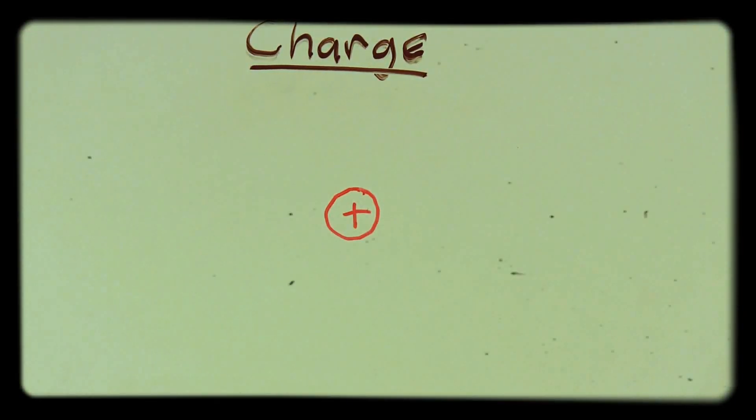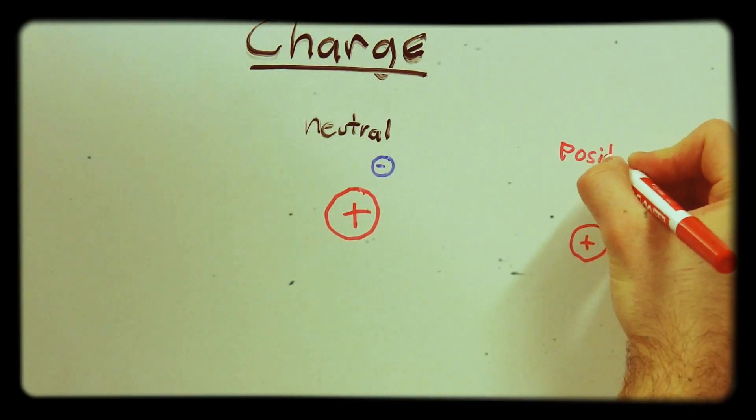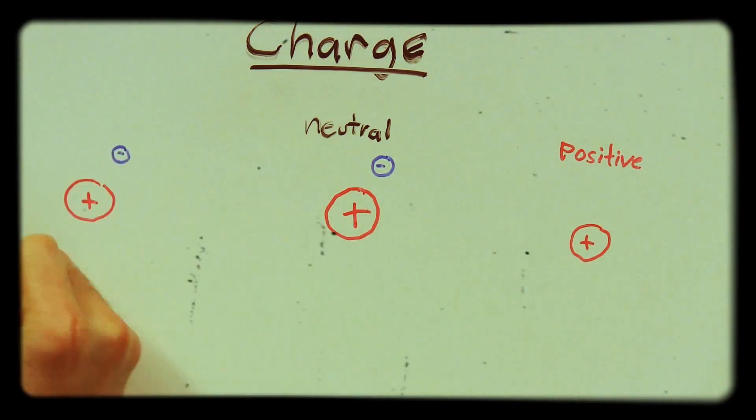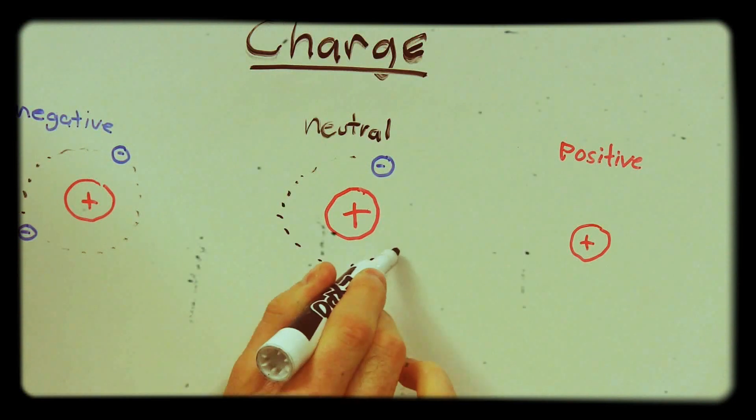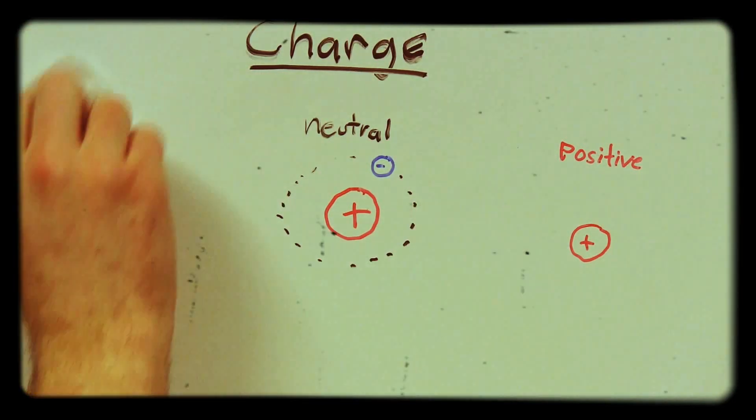Everything you see around you is made out of protons and electrons. Protons have a positive charge, and electrons have a negative charge. When we talk about charge, we mean the overall balance of these individual charges. More electrons than protons in an object means it will have a negative charge, and vice versa.